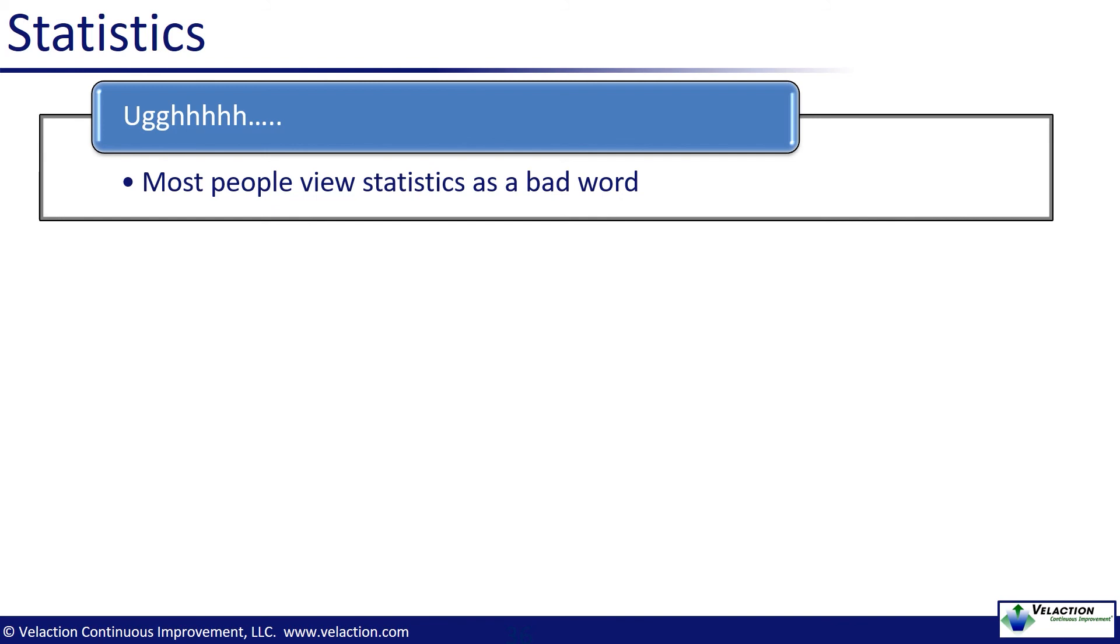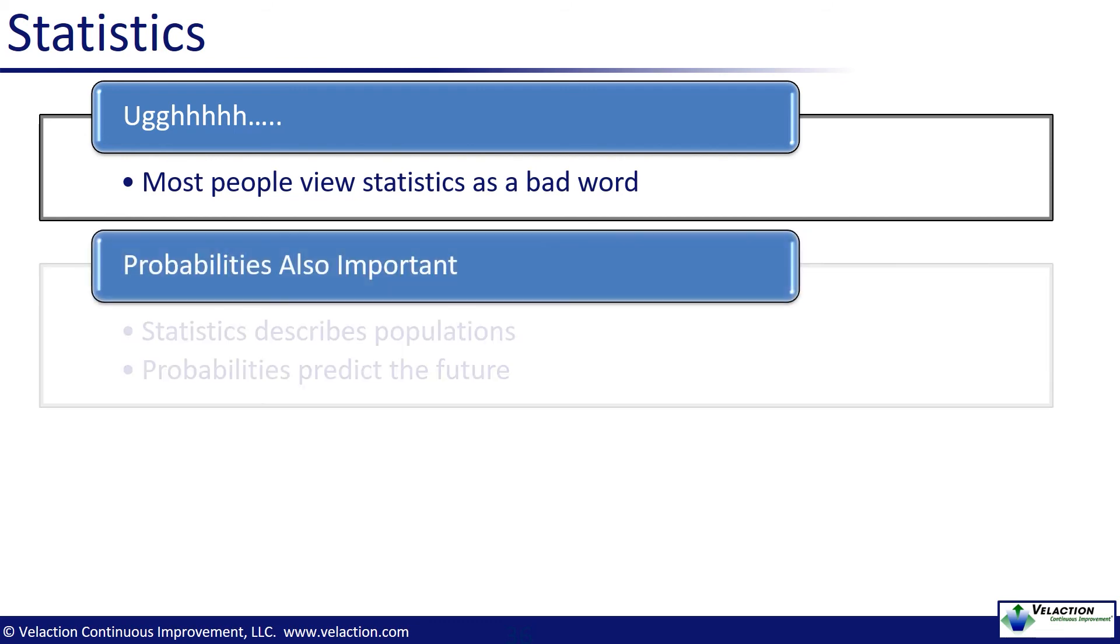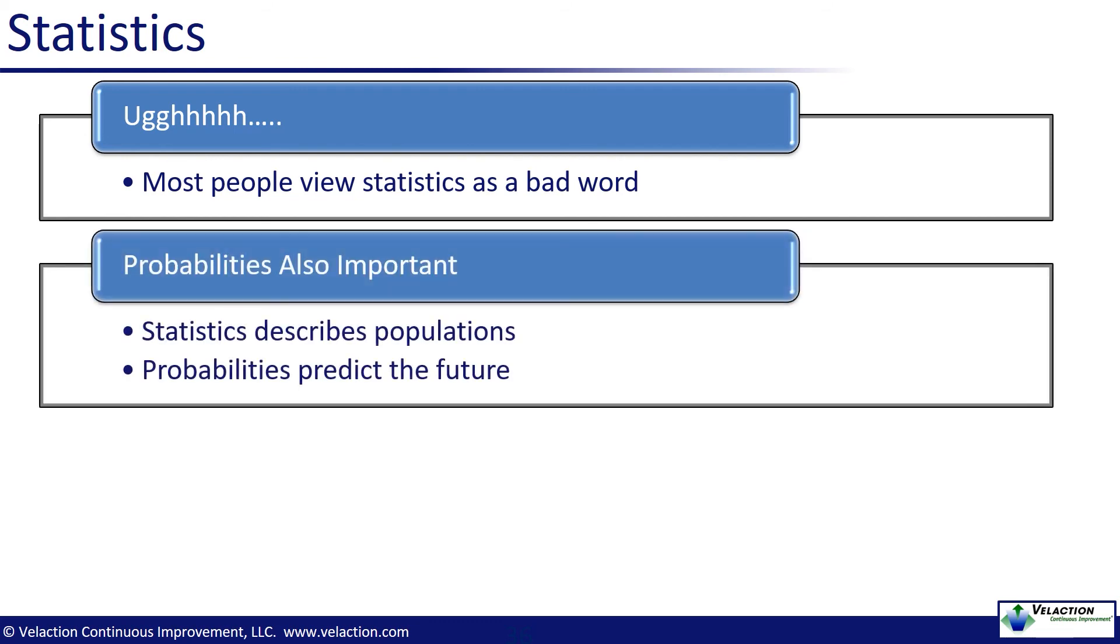I want to point out that in many math classes, statistics and probability are taught together. Statistics are used to describe the makeup of a population. Probability looks into the future and predicts the chance of something happening, often based upon the statistics of a population.